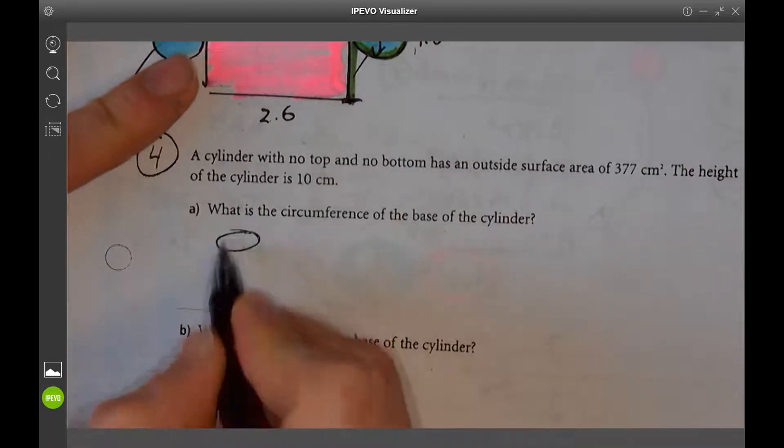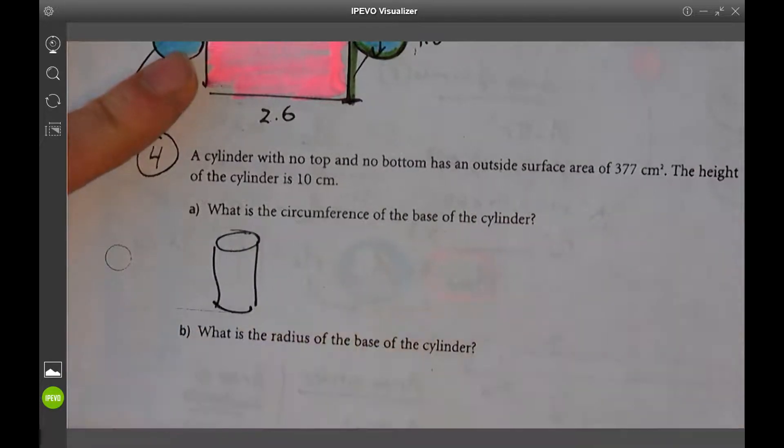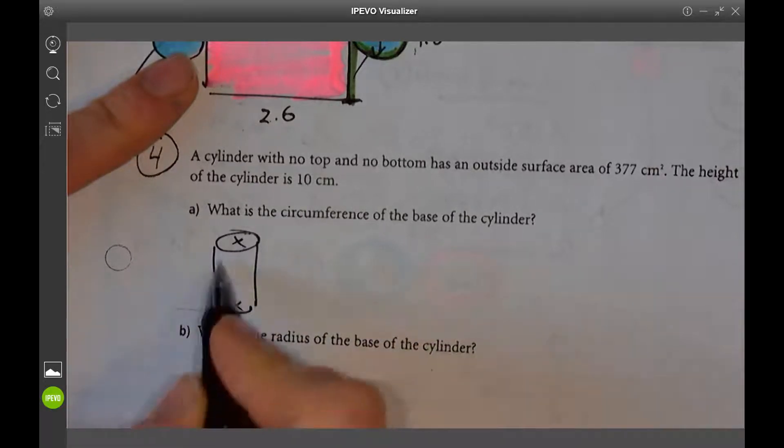Let's draw a cylinder. So it looks like no top, no bottom. Okay, but it has a surface. It's like a pipe.